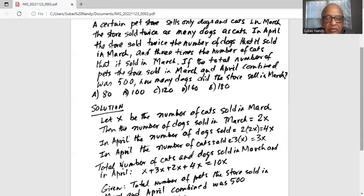Hence the total number of pets sold in March and April is x plus 3x plus 2x plus 4x.